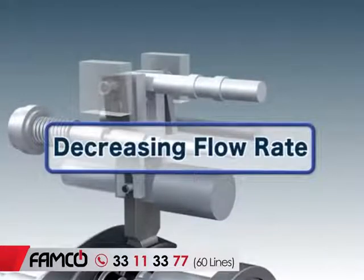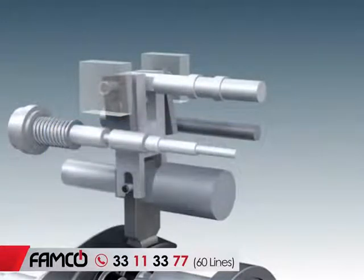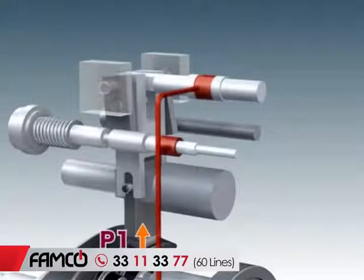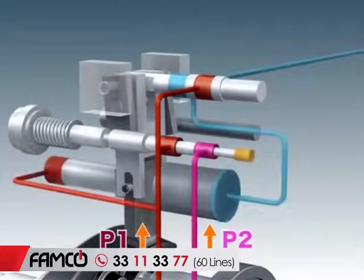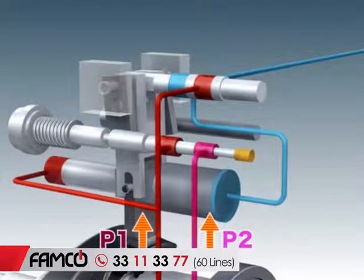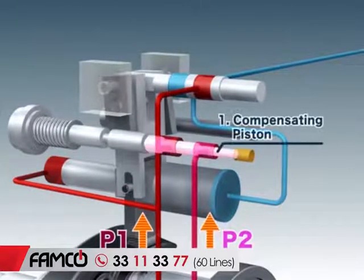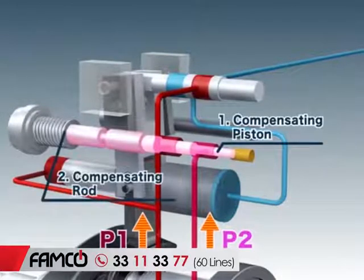Next, we will explain how the regulator decreases the flow rate. When the delivery pressure of the pump, P1, or of a companion pump, P2, increases, the pressure moves the compensating piston, pushing it against the compensating rod.